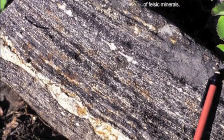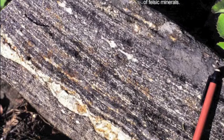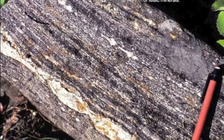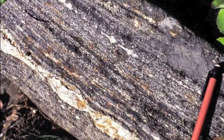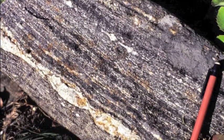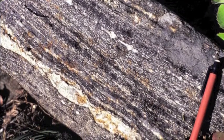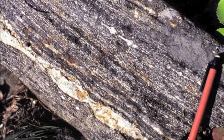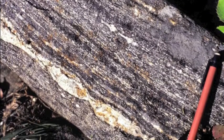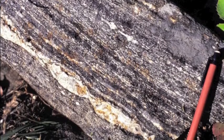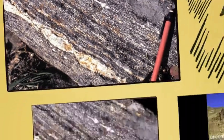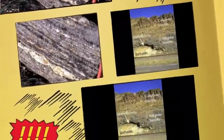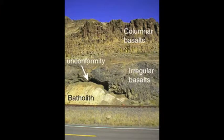Basaltic colonnades of the Idaho Batholith are another major contributor to the shape and structure of the Idaho Batholith today. These colonnades were formed through erosion as basalt erupted in fissure eruptions.